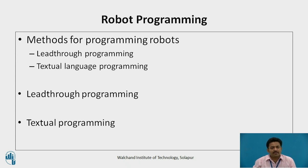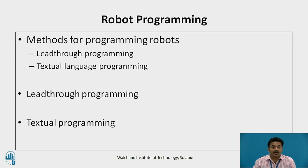There are various methods used for programming robots. The two basic categories of greatest commercial importance today are lead-through programming and textual language programming. Lead-through programming consists of forcing the robot arm to move through the required motion sequence and recording the motions into the controller memory, whereas textual programming methods use an English-like language to establish the logic and sequence of the work cycle.